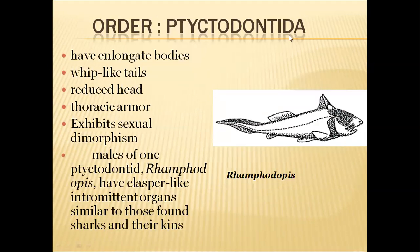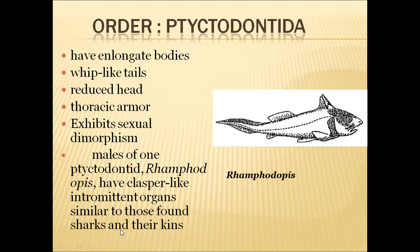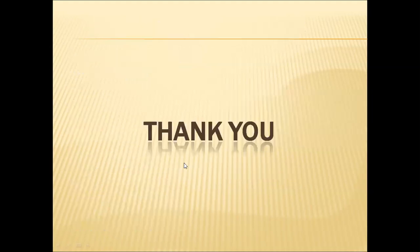The order Ptychodontida had elongated bodies with a whip-like tail shape, and the head was reduced in these organisms. The thoracic armour was also reduced. They exhibited sexual dimorphism — males and females looked different. Males of Ptychodontida, for example Brindabellaspis, had claspers similar to those of present-day sharks.